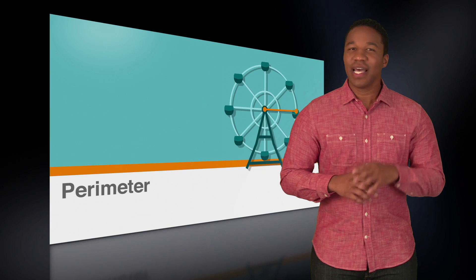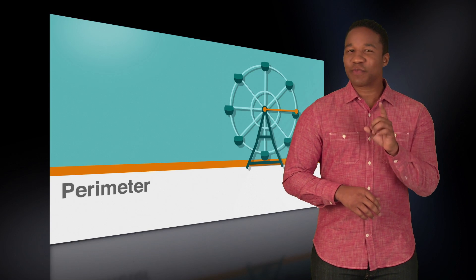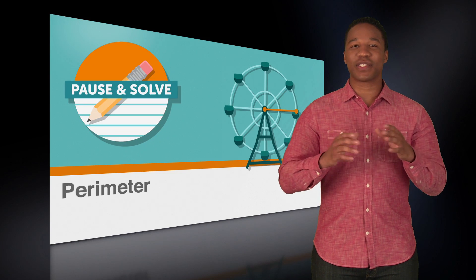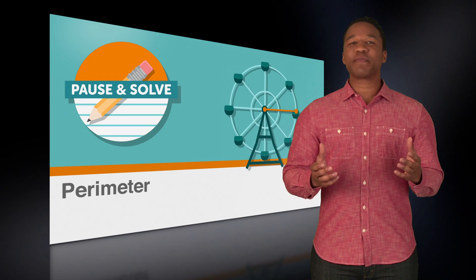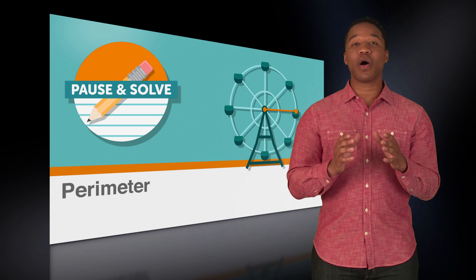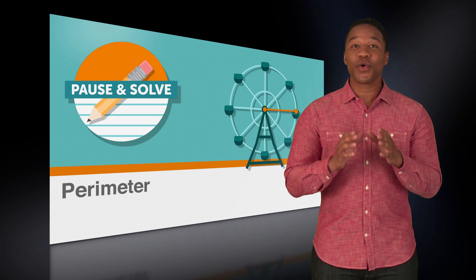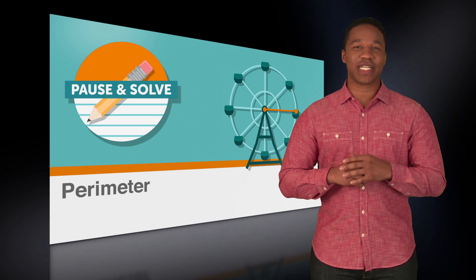Another type of perimeter problem that you might see is one where you have an irregular shape with lines that all intersect at 90-degree angles. Let's take a look at one, but for this problem, it's your turn to give it a go without me. This is a pause-and-solve problem. So grab scratch paper and a pencil, and when I say pause, you'll pause this video and work out the problem like it's test day. When you're done, restart the video and we'll go through it together.